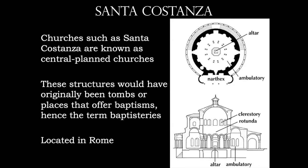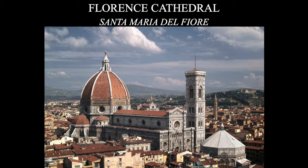Santa Costanza is located in Rome. A later church we'll cover in the second part of the survey course is the Florence Cathedral, also called Santa Maria del Fiore. There are three components to a cathedral complex: the cathedral itself — built in 1296 by Arnolfo di Cambio — the bell tower designed by Giotto in the early 1300s, and the baptistery in front, which is centrally planned like Santa Costanza and would have predated the other structures.